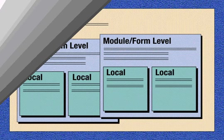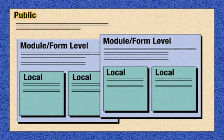Now let's turn to the final type of scope: public. Public variables are useful when a variable must be seen in any form or module. Public variables are declared in the general declaration section of a form or module, using the public statement.